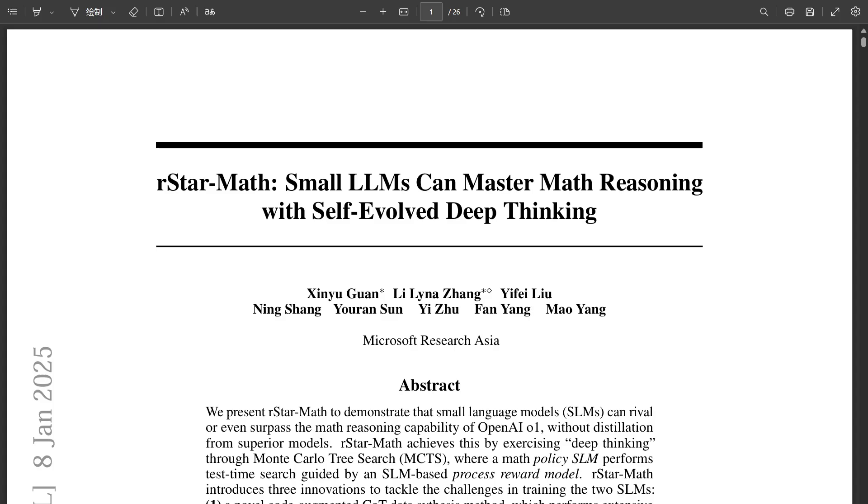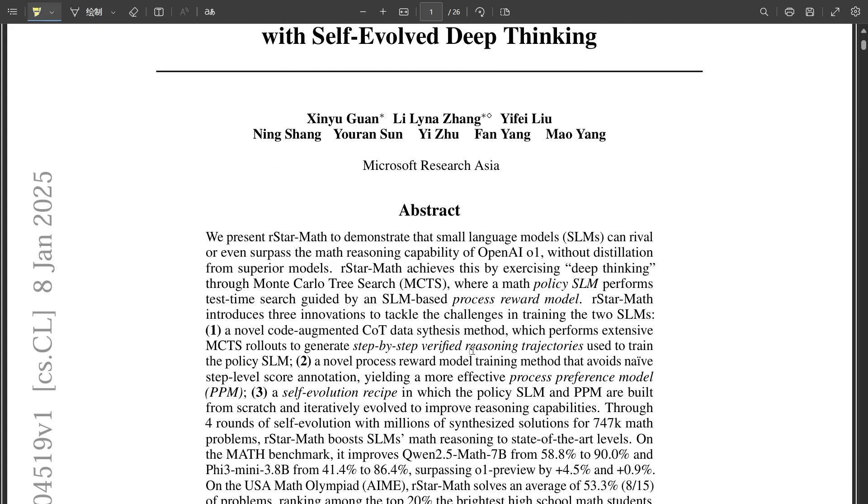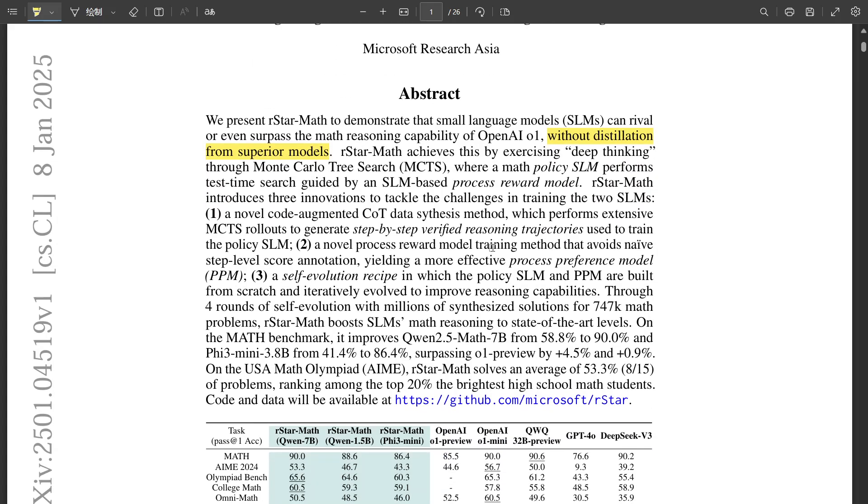Okay, so get ready for a deep dive into AI and math. You sent us some research on how even relatively small AI models can handle some pretty complex math problems. It's all about something called deep thinking. Specifically, a method called R-Star Math developed by researchers at Microsoft.